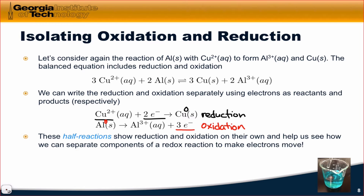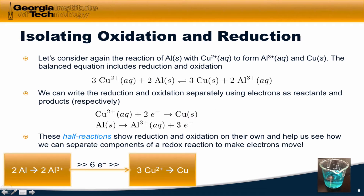Every redox reaction involves one oxidation process and one reduction process. These hypothetical processes with electrons as either reactants or products are called half-reactions, since they're half of a redox reaction. They give us a hint as to how we can separate the components of a redox reaction to make electrons move through a wire. Imagine we put copper 2+ and copper metal in one beaker and aluminum metal and aluminum 3+ in another beaker, connected by a wire.